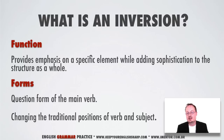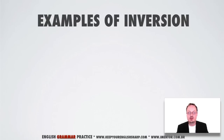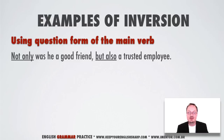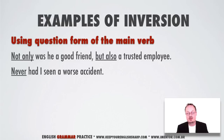Let's have a look at some examples of inversion where we're using the question form of the main verb. This is a very frequently used inversion: 'Not only was he a good friend but also a trusted employee.' Notice the pattern: 'not only... but also.' Here's another one: 'Never had I seen a worse accident.' Quite a common use too.